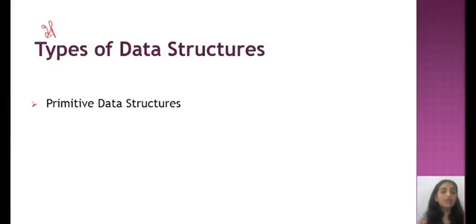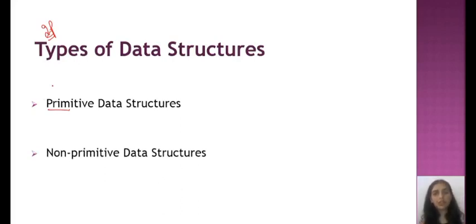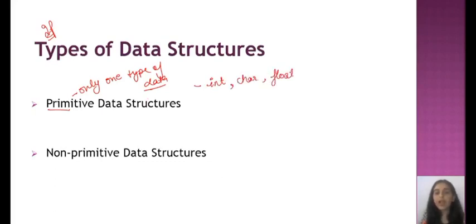Next point is very important: types of data structure. We have basically two types. First is primitive data structure and another is non-primitive data structure. So primitive data structure is a fundamental type of structure that stores the data of only one type. Only one type of data is stored in this type. As we all know, we have integer values, we have character values, we have float values. So primitive data structures can only use one type of value. If we are using int, we can only use integer values.